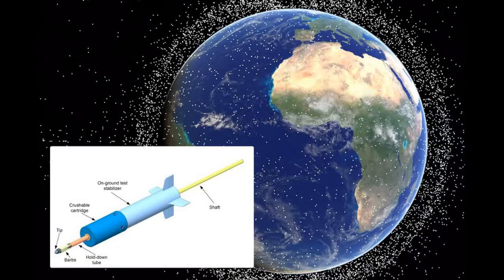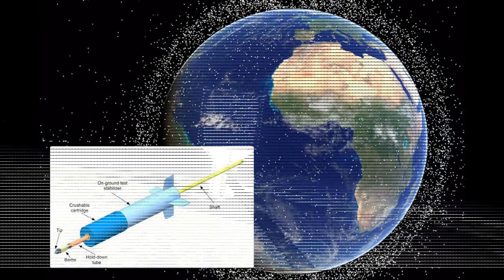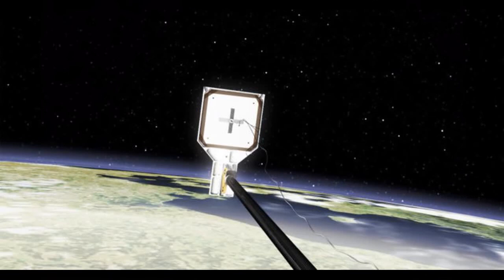The harpoon goes through these panels like a hot knife through butter, Alistair Wayman, one of the engineers working on the project, told the BBC. Once the tip is inside, it has a set of barbs that open up and stop the harpoon from coming back out.